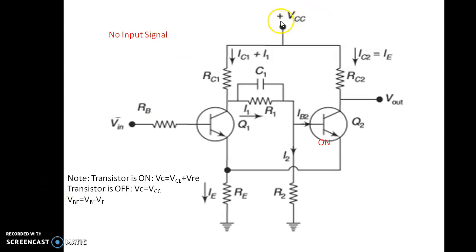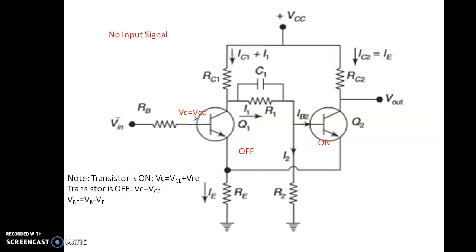When there is no input signal and only the DC supply is switched on, because of the voltage divider formed by R1 and R2, transistor Q2 turns on. As transistor Q2 is turned on, the current through resistance RE increases, which in turn develops a voltage drop across RE. As the current IE increases, the cut-in voltage of transistor Q1 decreases, which makes transistor Q1 off. At this instant, the collector voltage of Q1 will be VCC and the collector voltage of Q2 will be VCE(sat) plus VRE, as transistor Q2 is in the on condition.